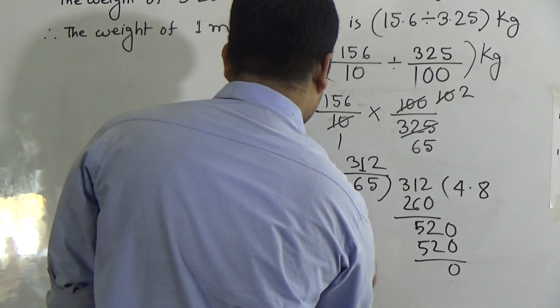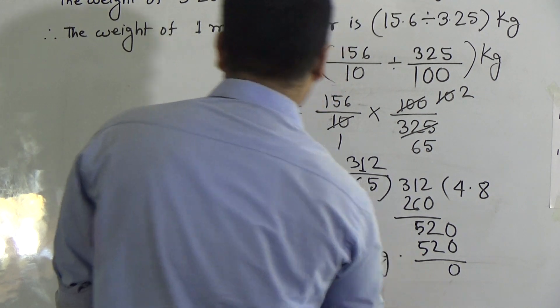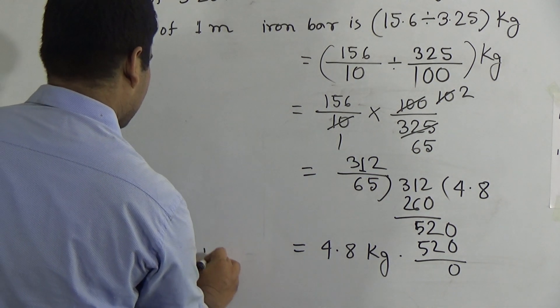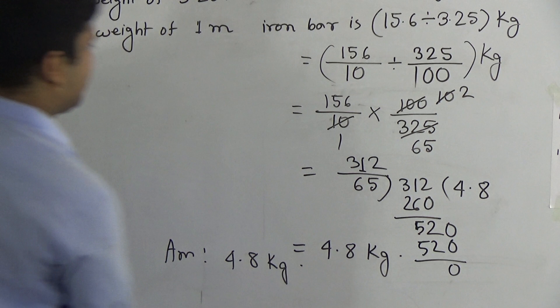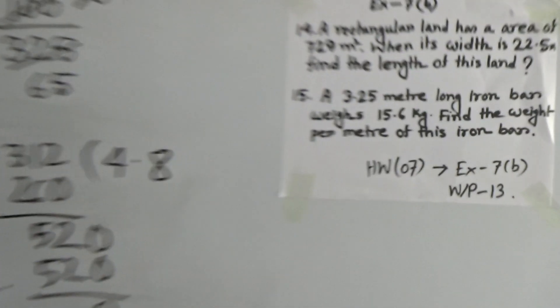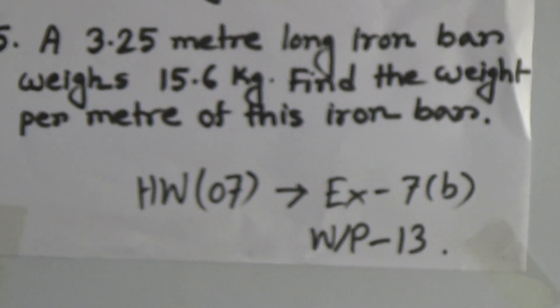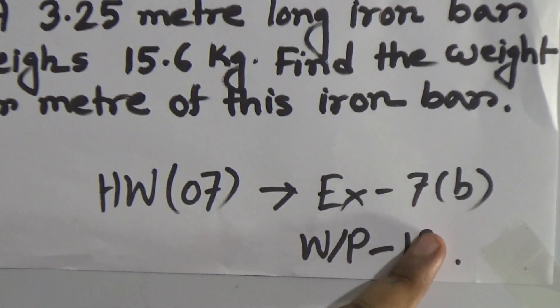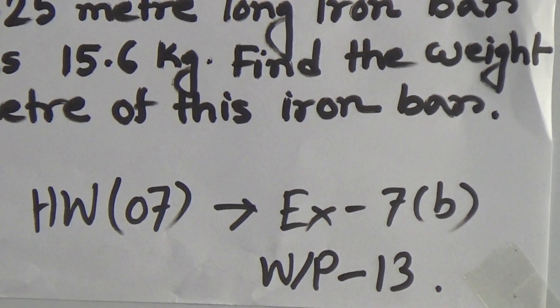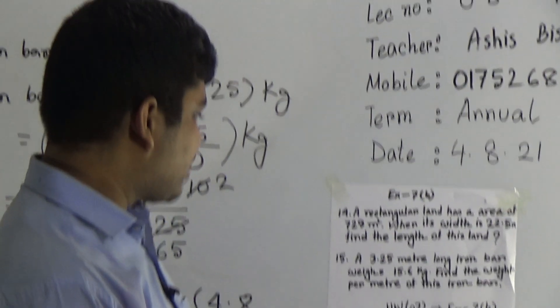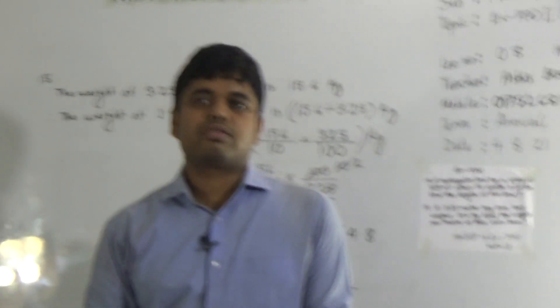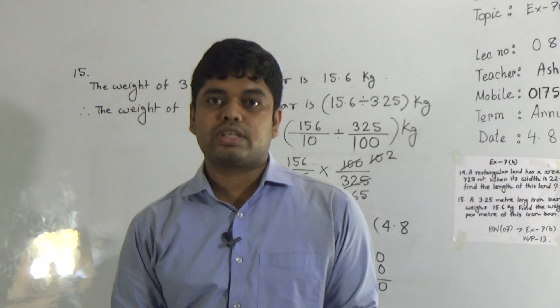So 4.8 kg is the weight of 1 meter iron bar. I hope you have understood and this is the answer, 4.8 kg. My dear students, I hope you understood my today's lecture. There is another one odd problem, which is odd problem number 13, and this will be your HW, and this is so easy. You read this first, and after this we do division and you get the answer. This is our today's lecture. I hope you have understood my today's lecture. Keep practicing at home, abide by your parents. See you soon. Till then, Assalamualaikum.